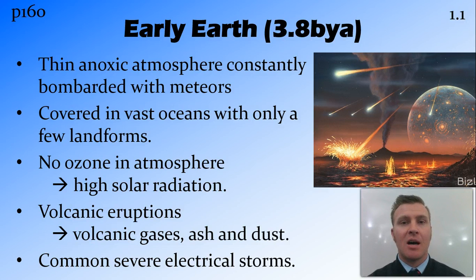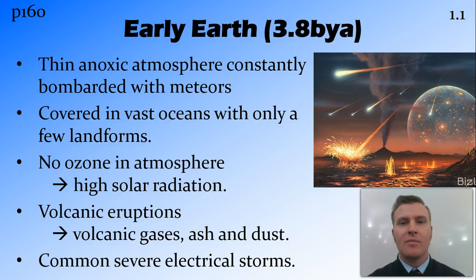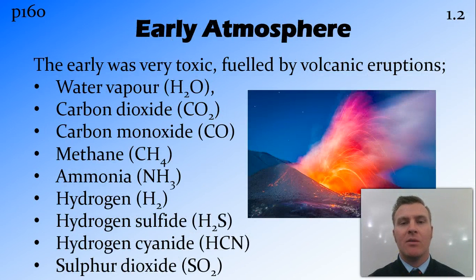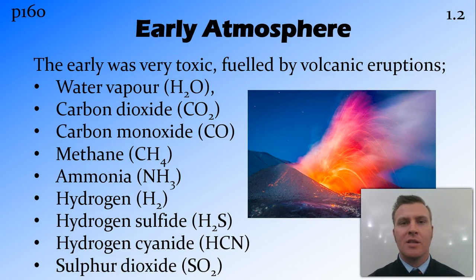The atmosphere at this time did not have an ozone layer, so it was not protected from the high amounts of solar radiation coming from the sun. And because the moon was so close to the Earth, severe electrical storms were very, very common. The early atmosphere was very different from the atmosphere that we have on Earth today. It was anoxic — it did not contain any oxygen — and instead had lots of toxic chemicals that were spewed into the atmosphere through the multitude of volcanic eruptions that occurred all the time.